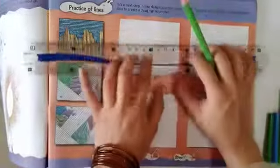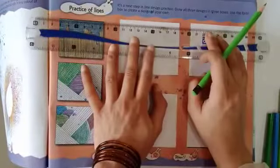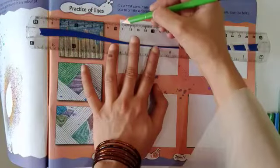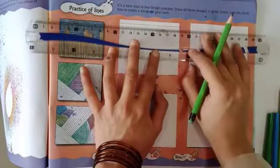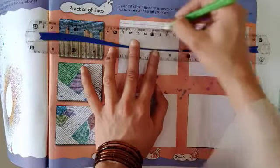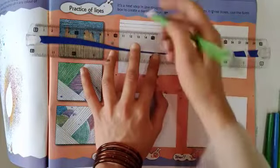First of all, we will copy this design. Make horizontal lines. Like this.